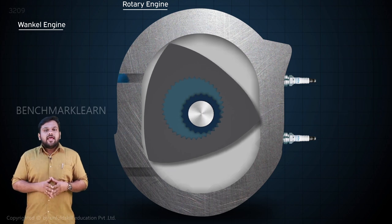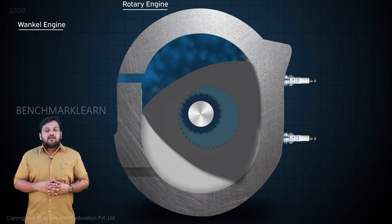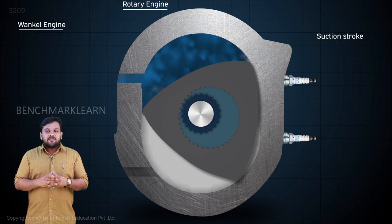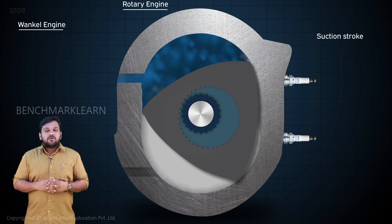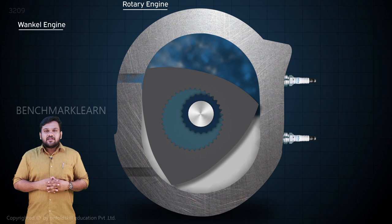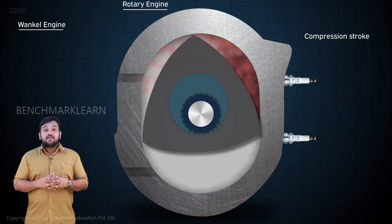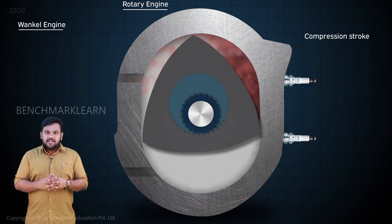The fuel-air mixture enters through the inlet valve and is sucked to the periphery of the housing by the rotating rotor. Because of its eccentrically rotating nature, the sucked gases are compressed at the ignition side by the rotor.